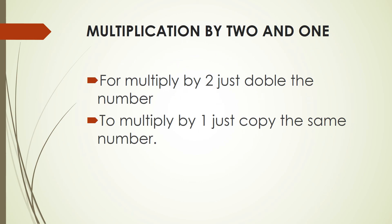For the remaining numbers, it's quite easy. For multiplication by 2, the only thing we need to do is just double the number. For example, multiplying 6 by 2 is 6 plus 6, which is 12. Or in the case of 9, the double of 9 is 18. And if we want to multiply by 1, we just copy the same number.